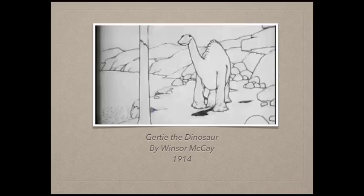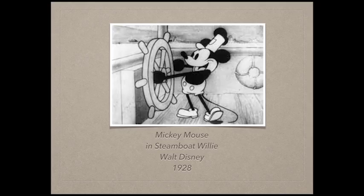We have Gertie the Dinosaur. There were animated shorts done before Gertie, but Gertie was the first one to really become popular. It was done by Winsor McCay, a cartoonist back in 1914. People experimented, and the next big one was in 1928 with Mickey Mouse and Steamboat Willie.